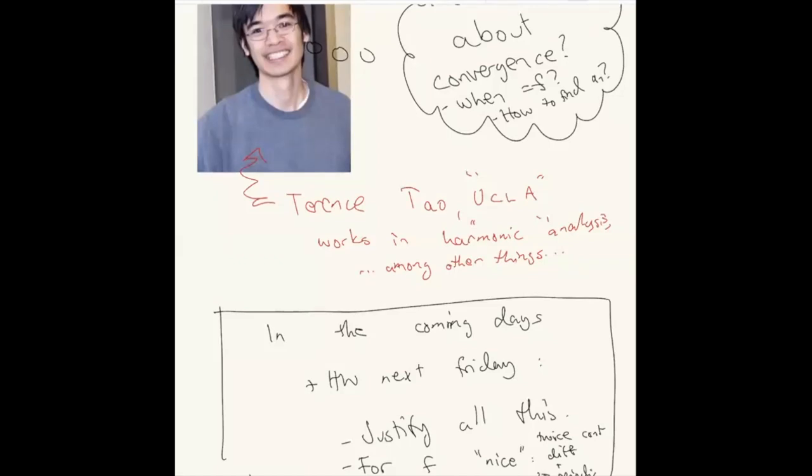In the coming days and homework, we will justify these in a very specific case. The specific case I briefly mentioned earlier is when f is twice continuously differentiable and 2π periodic. It has two derivatives in the 131a sense, a function of a single real variable. We'll express it as a series, sum of these series. Any questions?